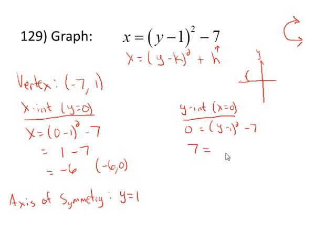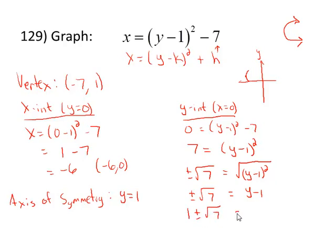Let's add the seven to the other side. We'll take the square root of both sides. Remember that when we take the square root of the constant side, it's going to be plus or minus. So we've got plus or minus the square root of seven equals y minus one. And we'll add one to the other side. One plus or minus the square root of seven equals y.